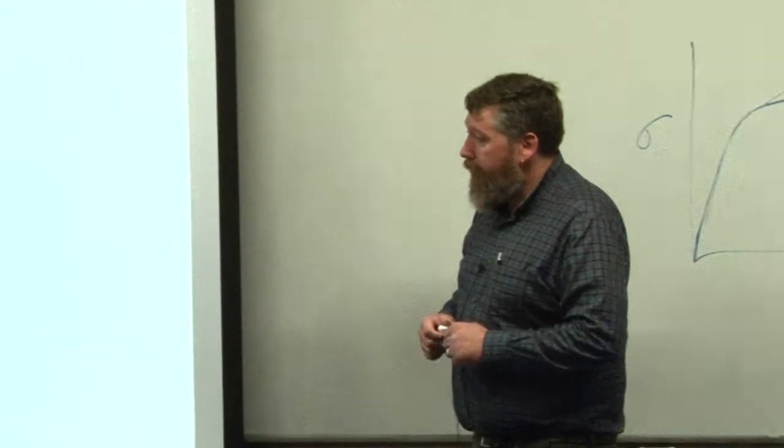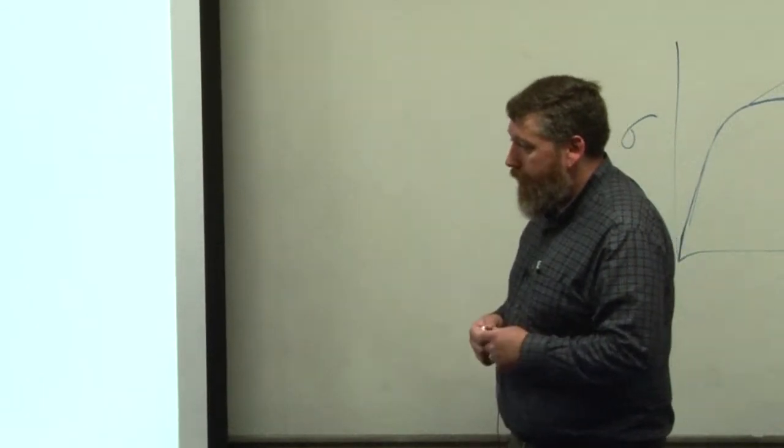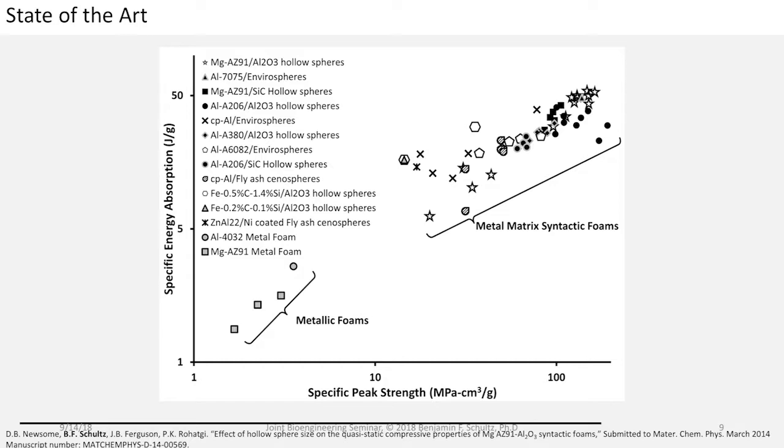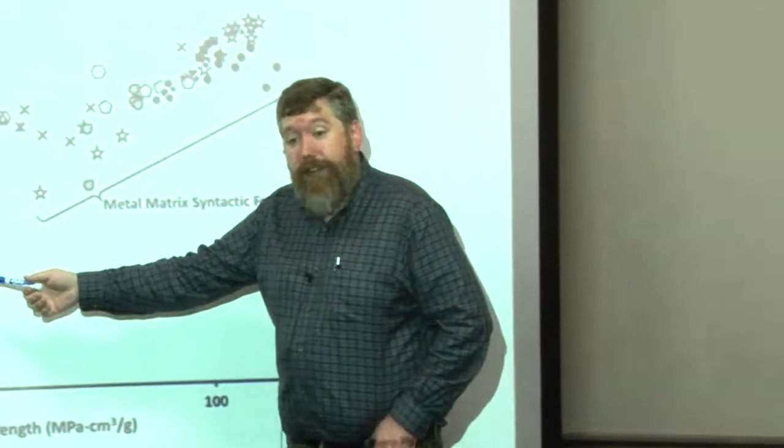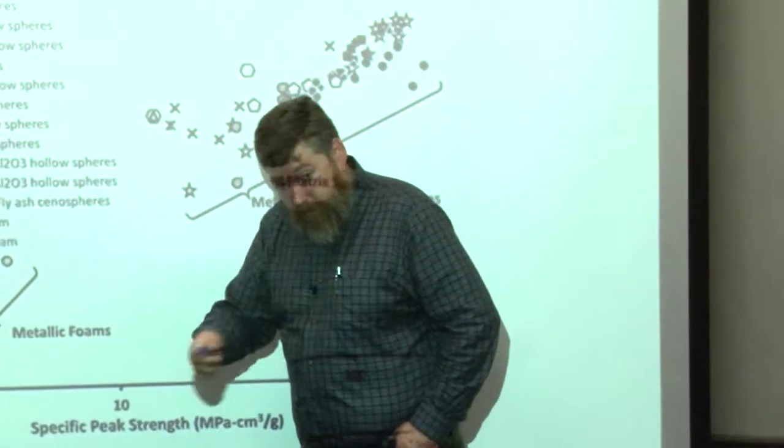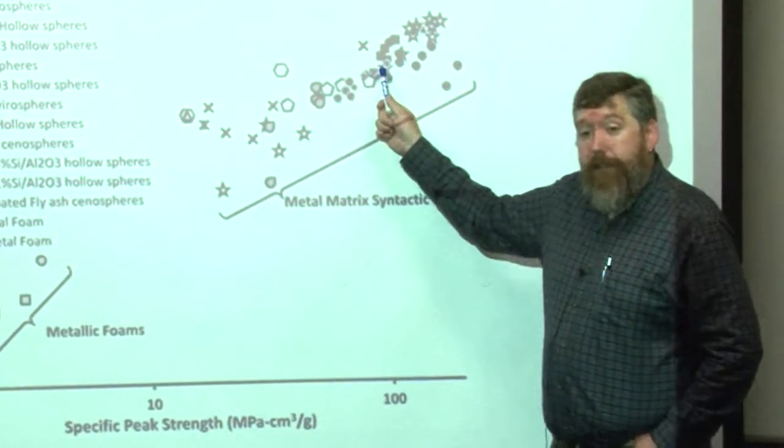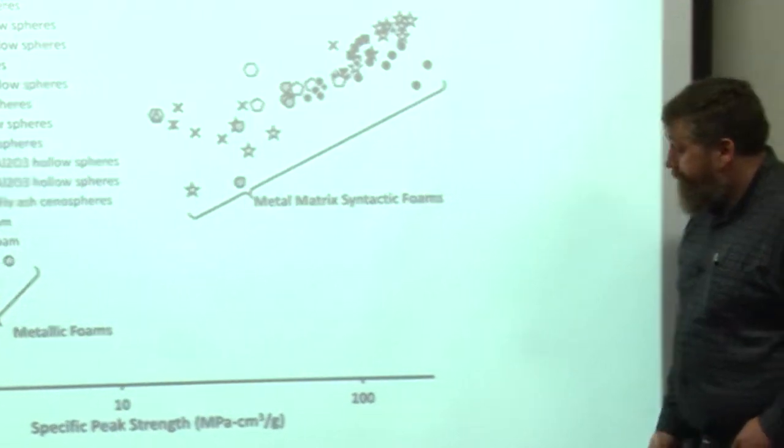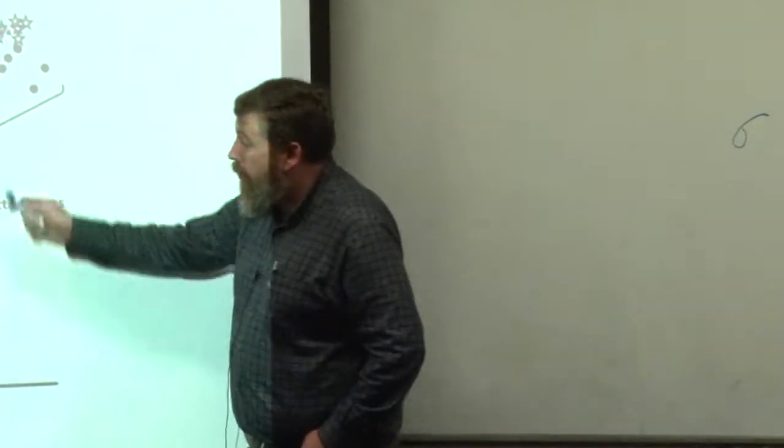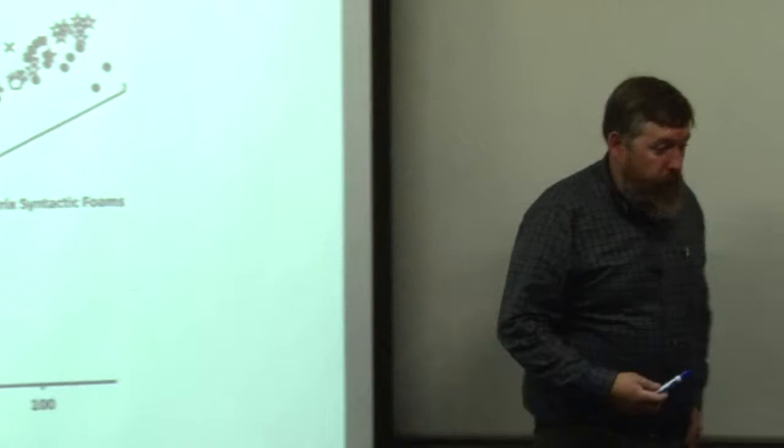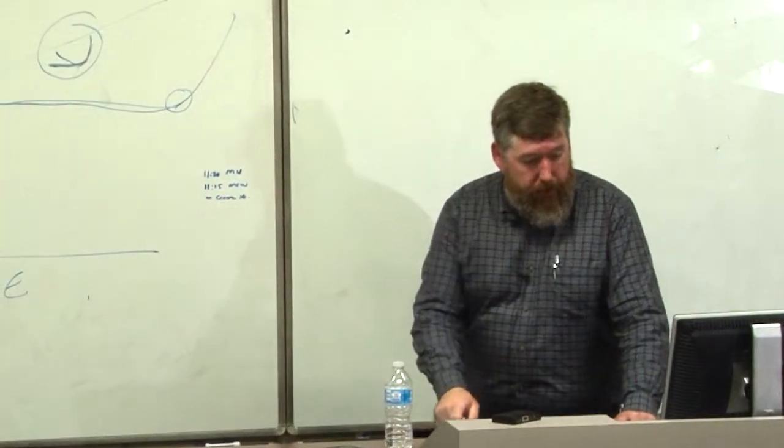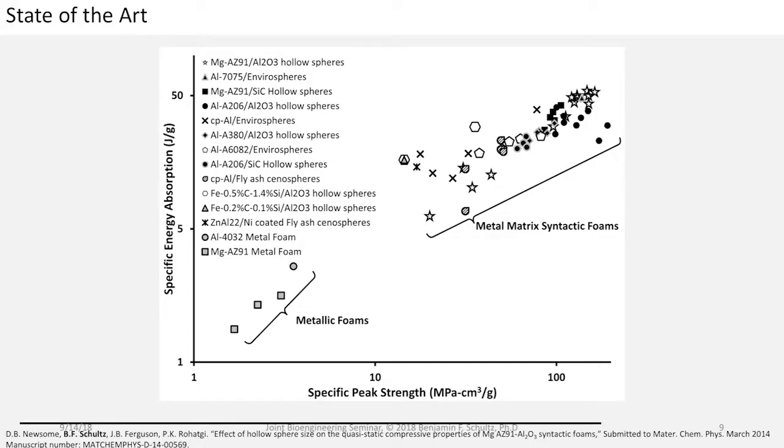Now this is an Ashby chart. This is showing the relative properties of various foam materials and this is a specific energy absorption which is the area under this curve divided by the density and then the specific peak strength which is the yield strength divided by the density. This is a way of comparing things by weight. This is a metal foam that I passed out earlier and these are the syntactic foams. They are capable of absorbing more energy than the metal foams are and at reduced weights or more energy and higher peak strengths. Some of our composites are up here. These stars are some of our foams that we've created in the lab.